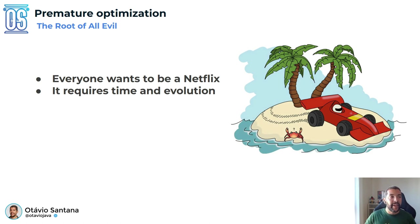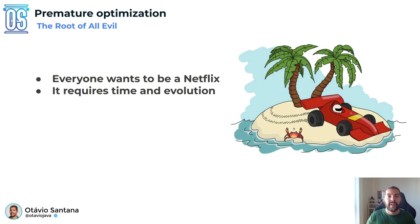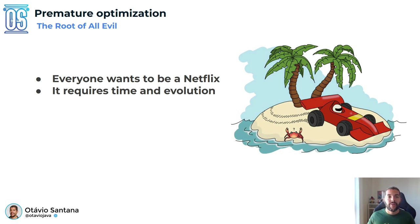The second big mistake is premature optimization — the root of all evil. For example, saying I have no idea yet, but let's use event-driven design for no reason because we want better performance. However, you did not test the hypothesis first. We have no idea if it will become effective from a business perspective. When we do that, we start to fight against two things: achieving what we need to do, and dealing with unnecessary complexity. Premature optimization is the root of all evil — avoid it, and it's okay to go step by step.